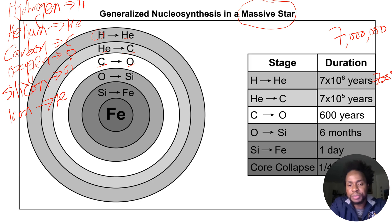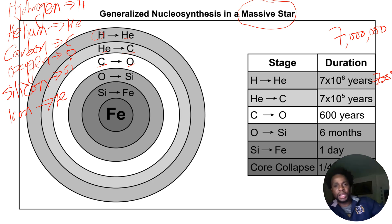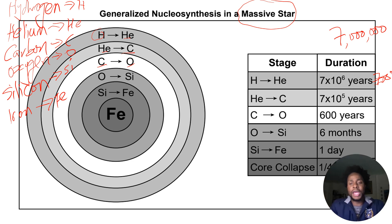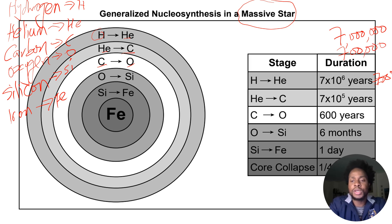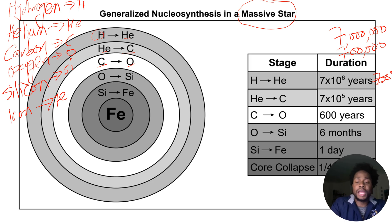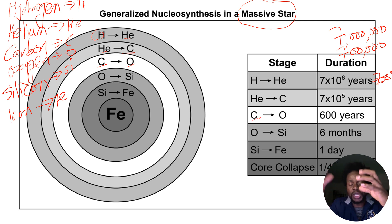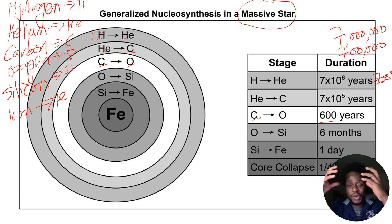When the star runs out of hydrogen, it goes to the helium created over the last seven million years and starts fusing helium to produce the heavier element carbon. That takes 7 × 10⁵ years, equivalent to seven hundred thousand years. When it runs out of helium, the star fuses carbon into oxygen, which takes six hundred years. Then it fuses oxygen to produce silicon, which takes six months.